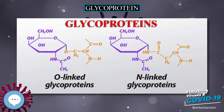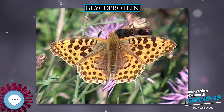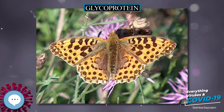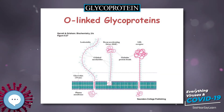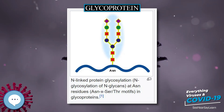Glycoproteins are proteins which contain oligosaccharide chains (glycans) covalently attached to amino acid side chains. The carbohydrate is attached to the protein in a co-translational or post-translational modification. This process is known as glycosylation. Secreted extracellular proteins are often glycosylated.